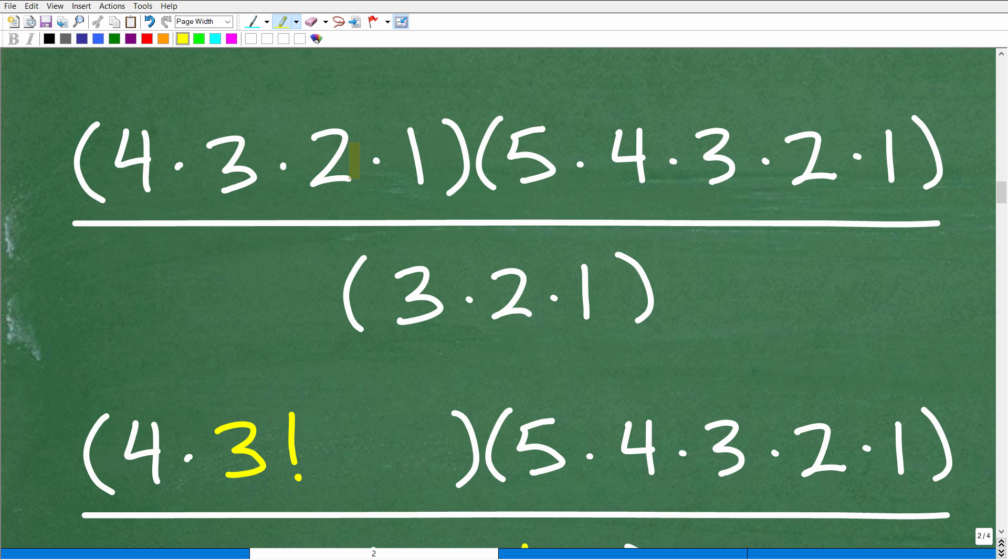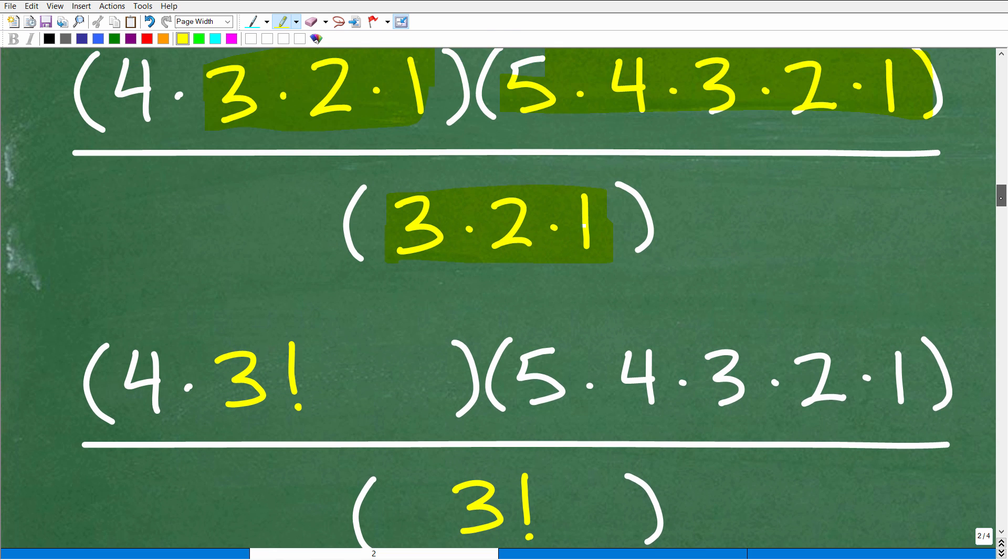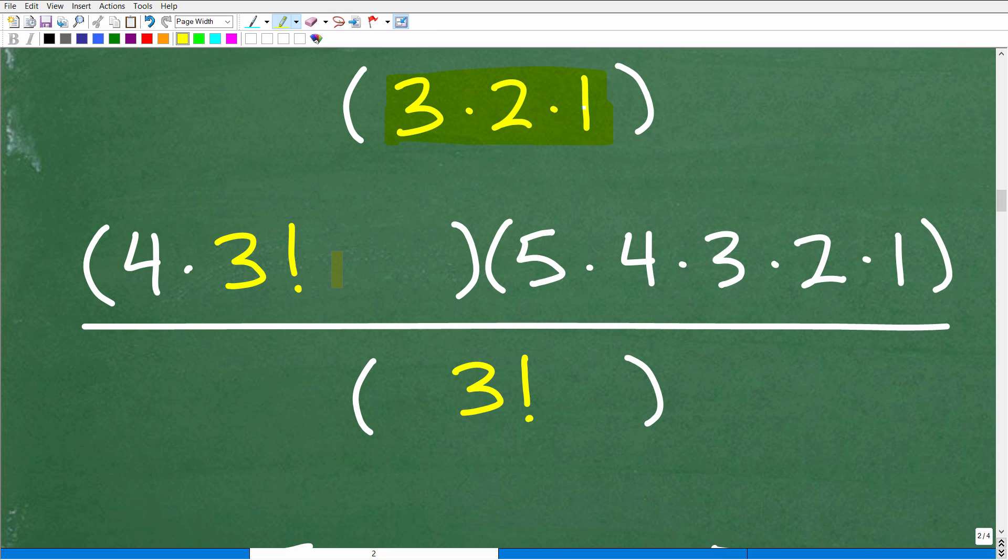So when you have a problem like this, what you want to do is say, this is four factorial, this is five factorial, this is three factorial. We can just look at four factorial as four times three factorial. And that's really the way you want to structure things. So you look for opportunities. This is three factorial right here. And then here I have five factorial. You can do this in a couple of different ways. Four factorial is four times three times two times one, so instead of writing all that out, you can just go, oh, four times three factorial.